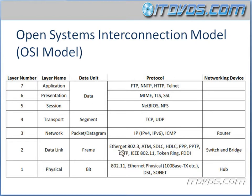Some of the protocols that function at layer 2 are going to be Ethernet, 802.3, ATM, SDLC, HDLC, PPP, PPTP, L2TP, IEEE 802.11, token ring, and FDDI.